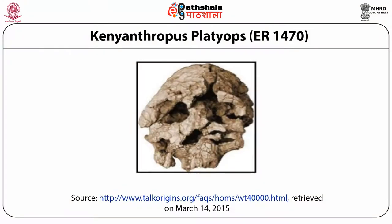Kenyanthropus platyops. A partial skull was discovered from Lomekwi in Kenya, dated about 3.5 million years. The size of the skull is similar to Australopithecus afarensis and Australopithecus africanus, and has a large flat face and small teeth. This variety is contemporary to Lucy. Some scholars such as Voigt rejected the genus Kenyanthropus and considered it a variant of Australopithecus afarensis.